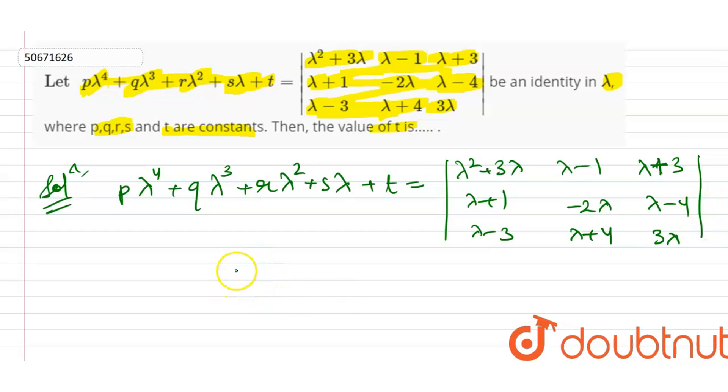So, if I have to find t, what I have to do is put lambda equal to 0. So, put lambda equals 0.